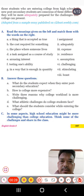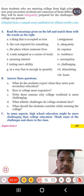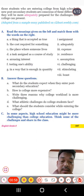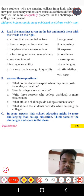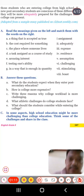Students, we have Exercise A here: read the meanings given on the left and match them with the words on the right. You just need to match the words with their meaning. The first one: a thing that is accepted as true — the thing which is accepted as true.